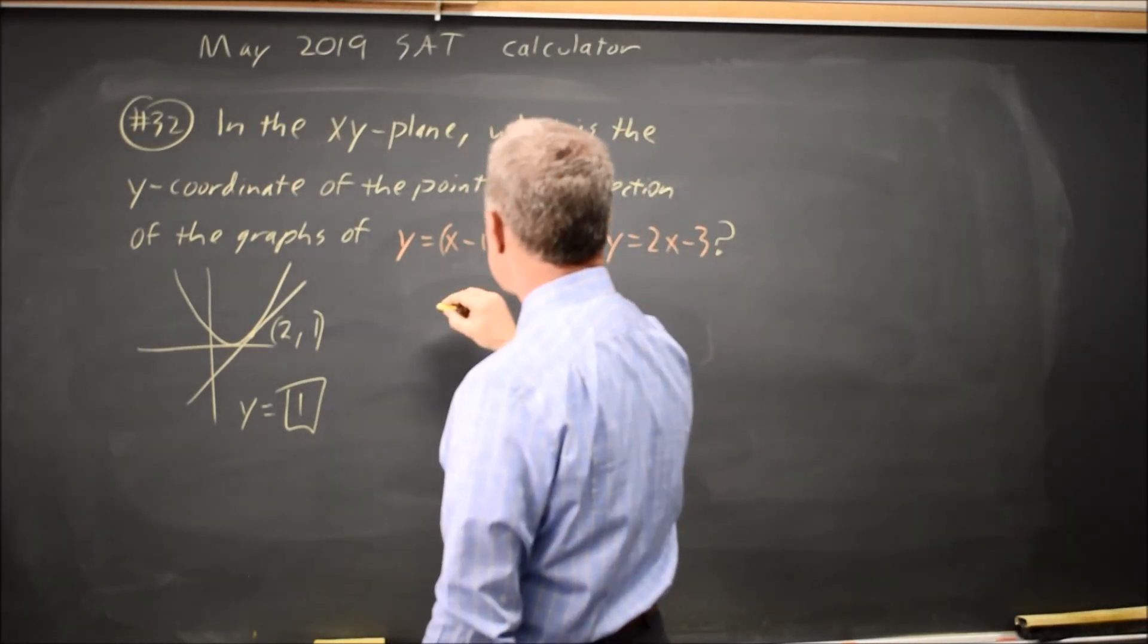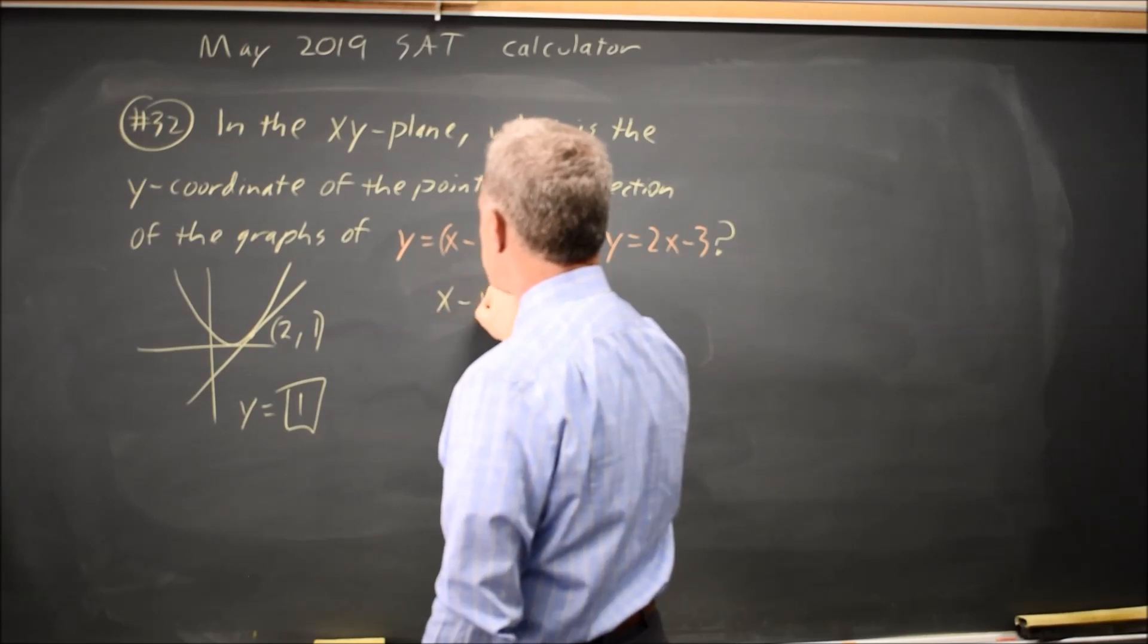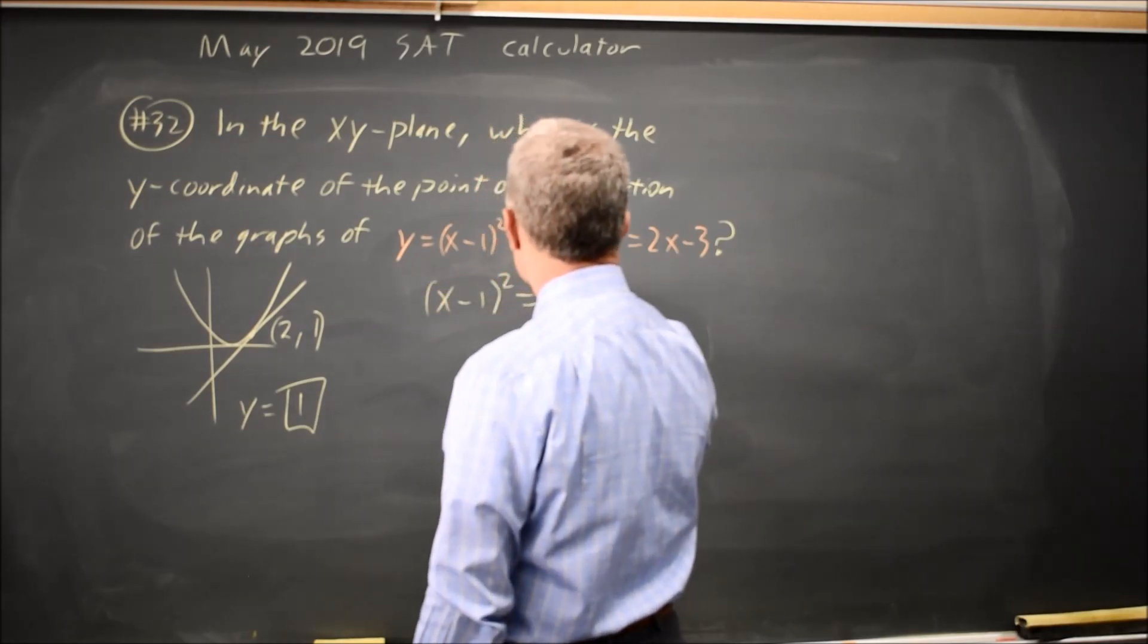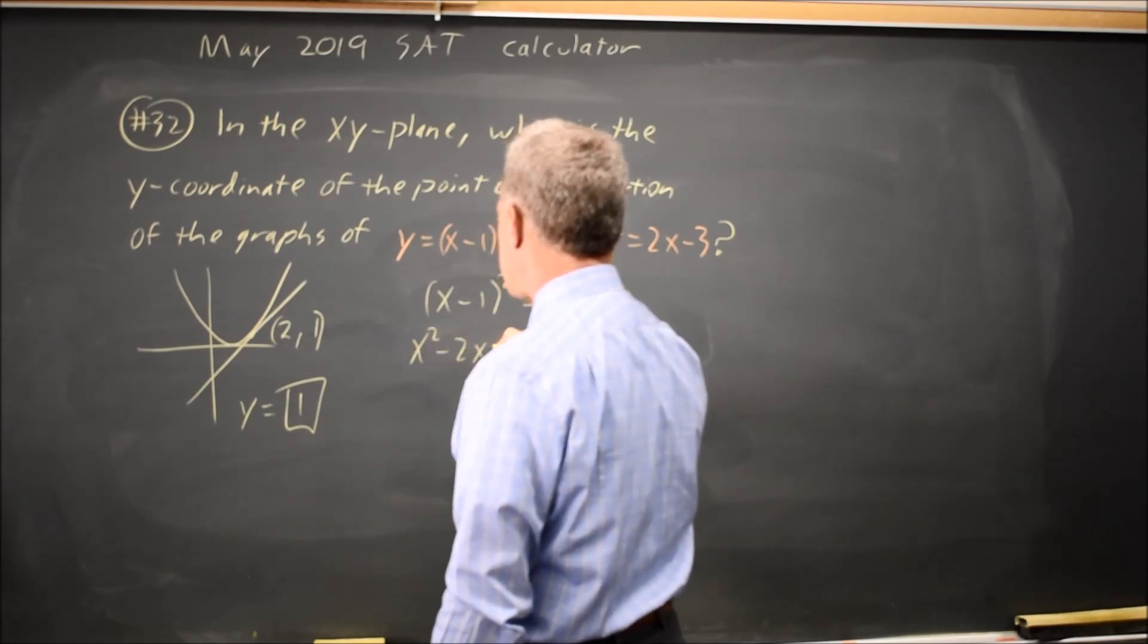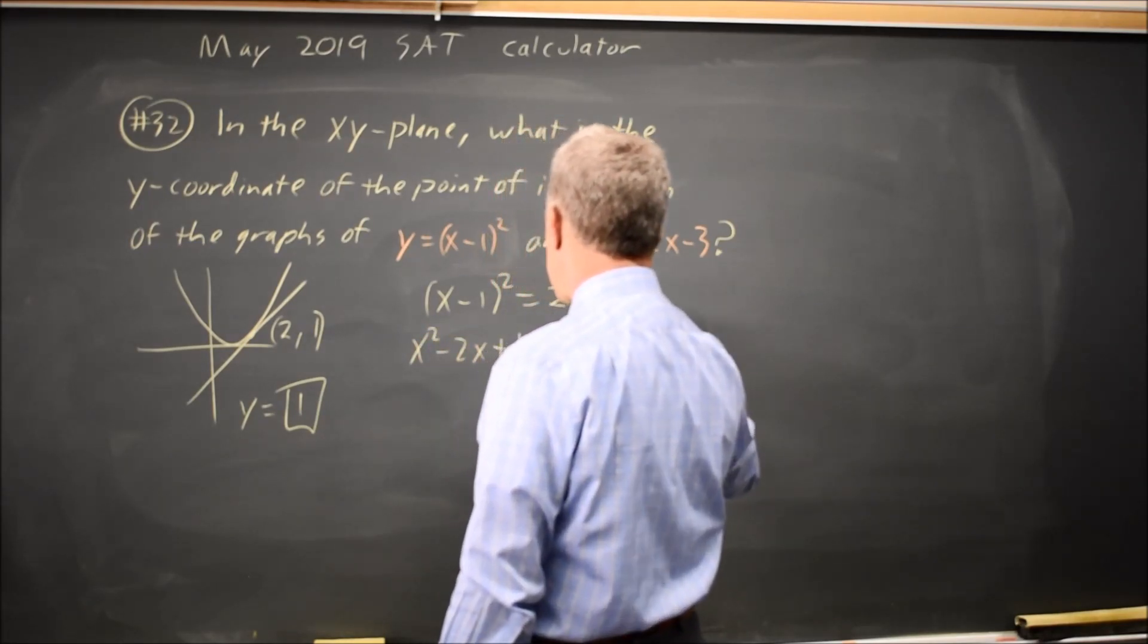If these two curves intersect, then the y values are equal, so x minus 1 squared equals 2x minus 3. FOIL gives me x squared minus 2x plus 1 equals 2x minus 3.